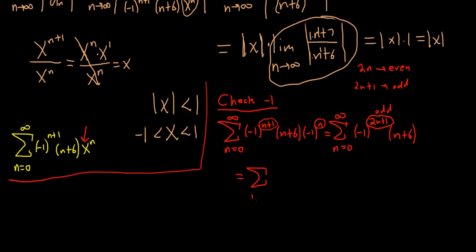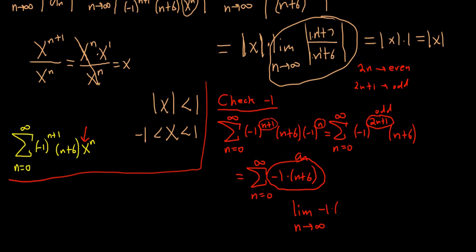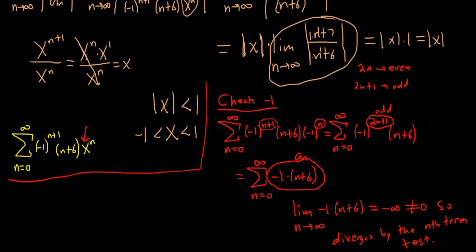Now we have to determine if this series converges or diverges. The go-to test — the test you should always do every single time — is the nth term test. It says you take the limit of your a sub n, and if this limit is not 0, the series diverges. The limit as n goes to infinity of negative 1 times n plus 6: n plus 6 approaches infinity, there's a negative, so it's negative infinity. This is not equal to 0, so it diverges by the nth term test. That means we do not include negative 1 in our interval.